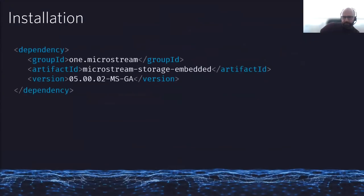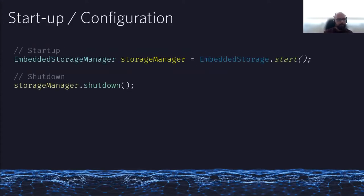MicroStream is available in Maven Central since we went open source. Just use the build management tool of your choice — Maven or Gradle, whatever you prefer — and use our storage-embedded artifact and you're good to go. For startup, the most simple way is to use the convenience or shortcut methods of the EmbeddedStorage class. It will create your embedded storage manager, which is the connection from the object graph to the storage layer. With a shutdown method you can end the running management threads of the storage manager.